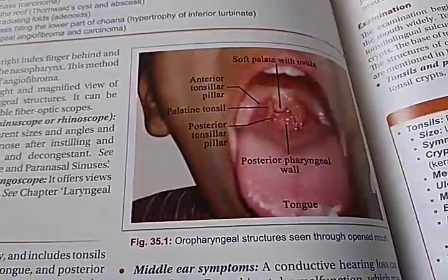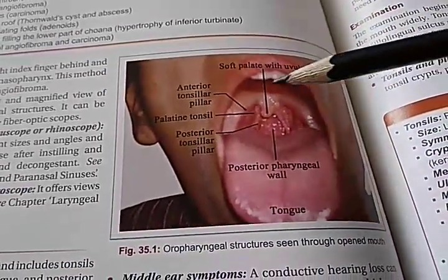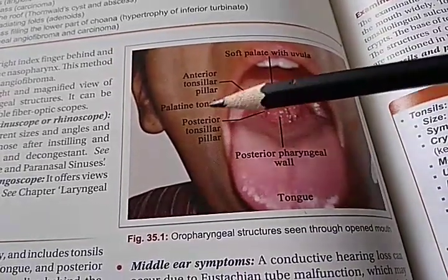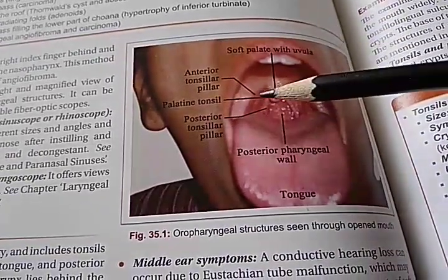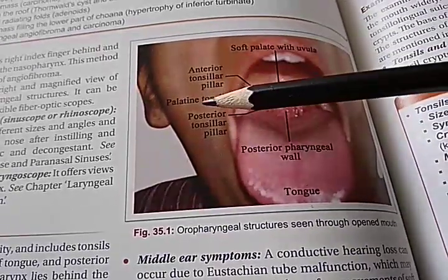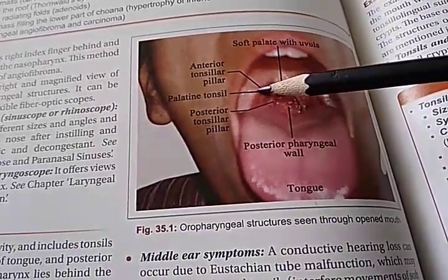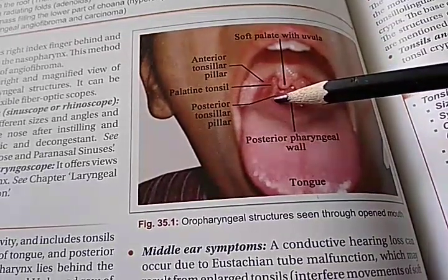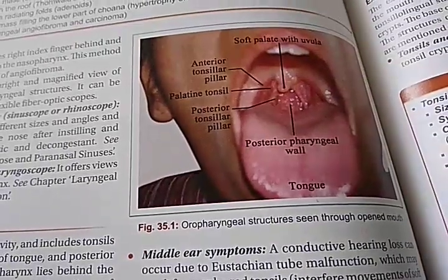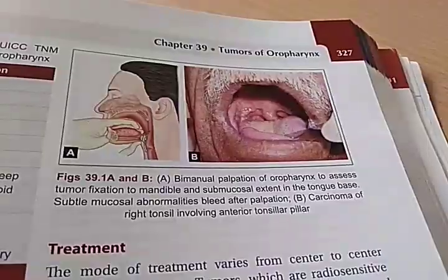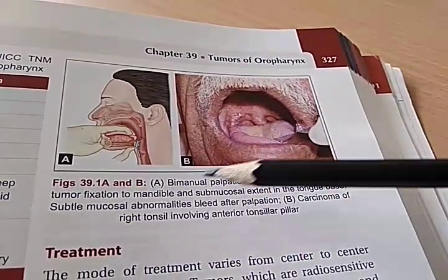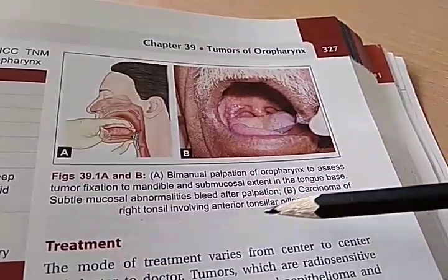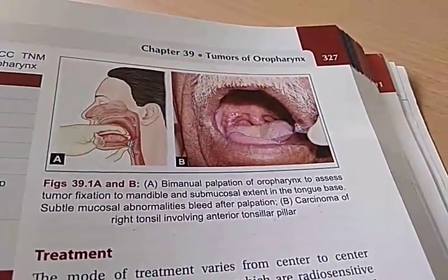This is a nice photo of the mouth — when you look into the mouth of a person you will see the soft palate with uvula, posterior pharyngeal wall, tongue, posterior tonsillar pillar, palatine tonsil, and anterior tonsillar pillar. And here they are showing tumors of the oropharynx — specifically carcinoma of the right tonsil involving the anterior tonsillar pillar. Now you know why you looked at all those anatomical structures.